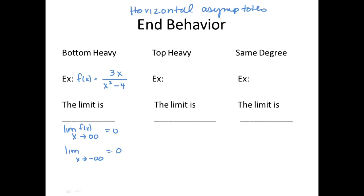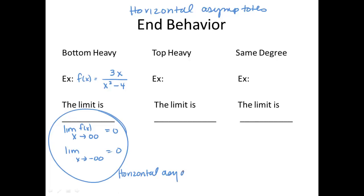The reason is: if I choose a large value — say a million — in the top I'd have 3 times a million, but in the bottom I'd have a million squared minus 4. So despite the top being 3 million, the bottom is now a million squared. When I take any number and divide it by a gigantic number, I end up with something incredibly close to 0. So the limit is 0, and that means we have a horizontal asymptote at y equals 0 — it levels off and approaches 0 in both directions.